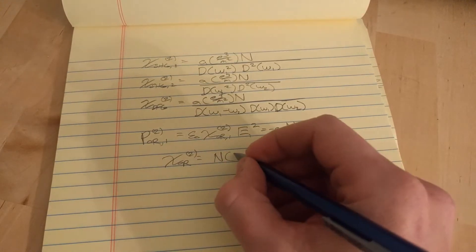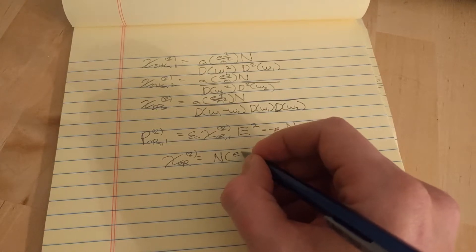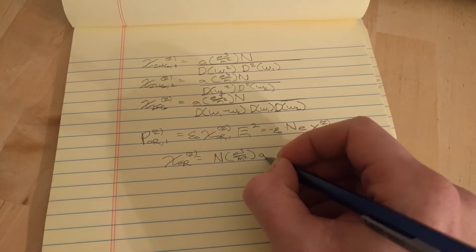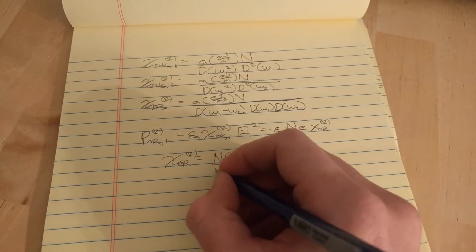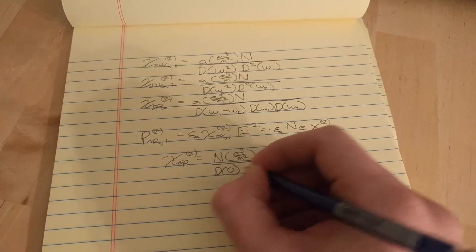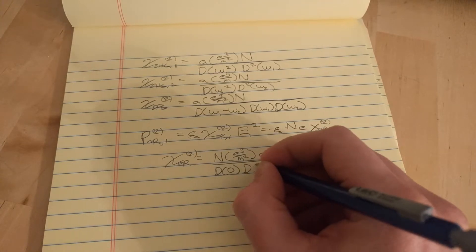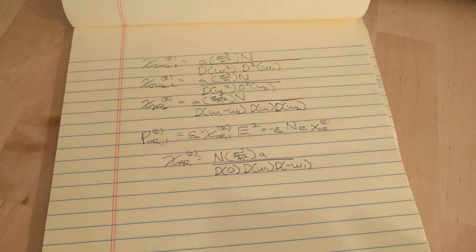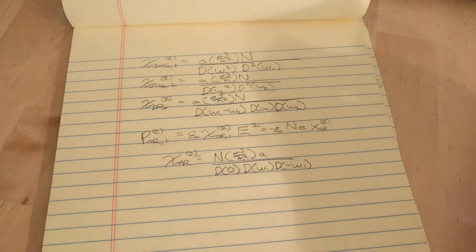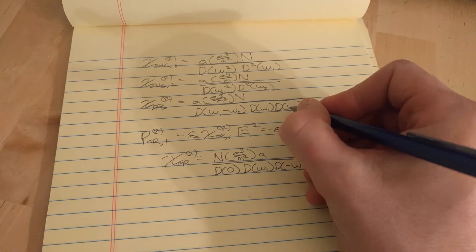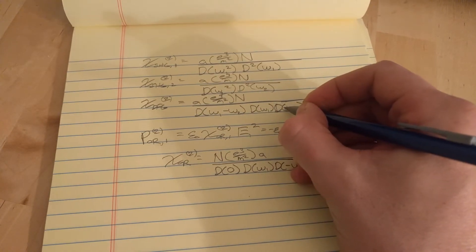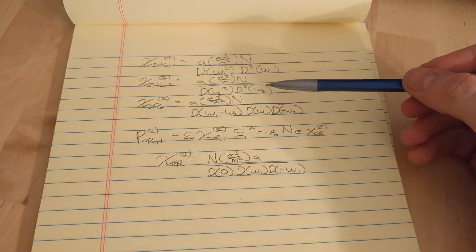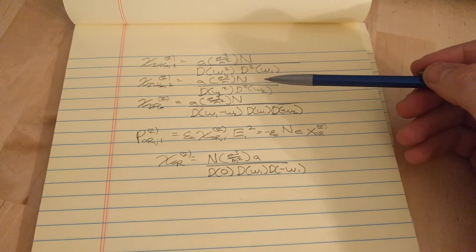The susceptibility for optical rectification is just this. And for DFG I got it wrong because one of these is going to have to have a minus sign—the ω2 is. So that's how you get the second order nonlinear susceptibility derived classically by using an anharmonic correction term to the Lorentz model of the atom.